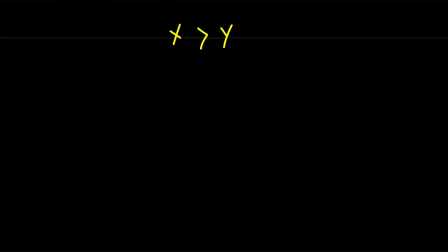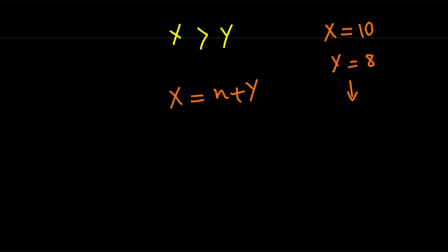So x and y are two positive integers, and x is the greater one. So that means I can find some integer n and say that x equals n plus y. For example, if x equals 10 and y equals 8, then n must be 2. Or if x equals 5 and y equals 1, then n equals 4. So for any two non-equal integers, I can find an integer that I can add to the smaller one and get the bigger one.